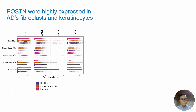The expression of berostin was highest in fibroblasts and basal keratinocytes from AD. However, the expression of its receptors, integrin alpha-V and integrin beta-5, were comparable between the three phenotypes.